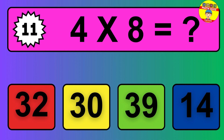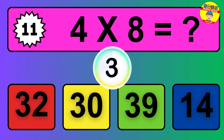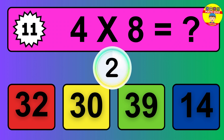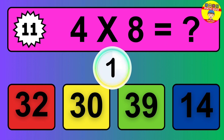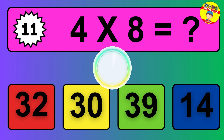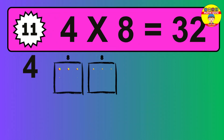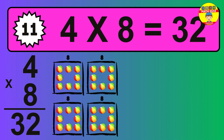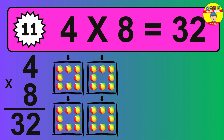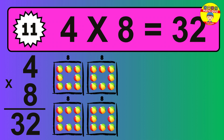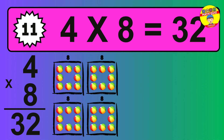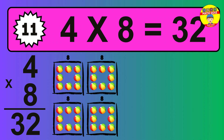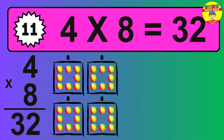Four times eight equals what? The answer is four times eight is thirty-two. To calculate, we have four groups with eight balls each one. So how many balls do we have? Thirty-two balls.